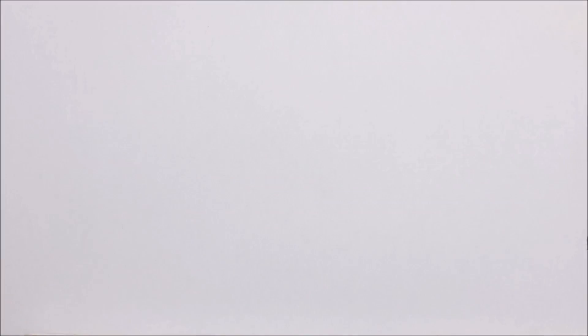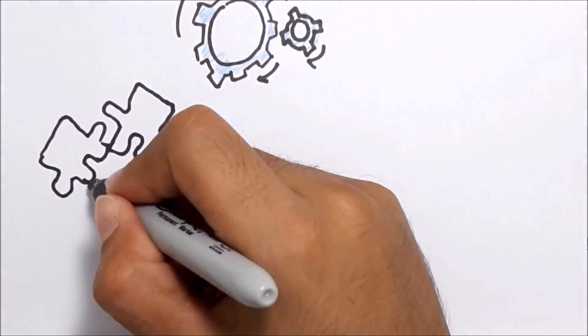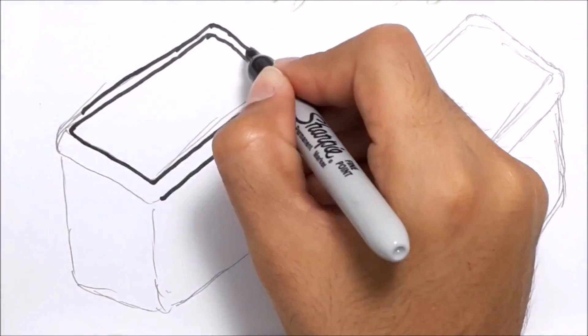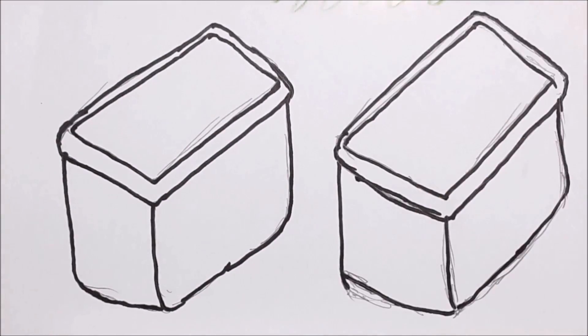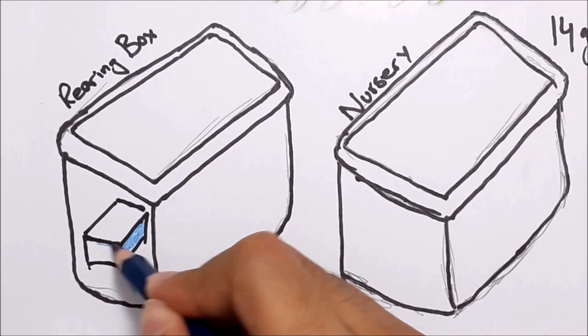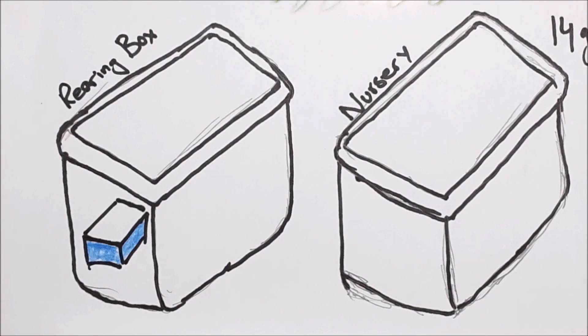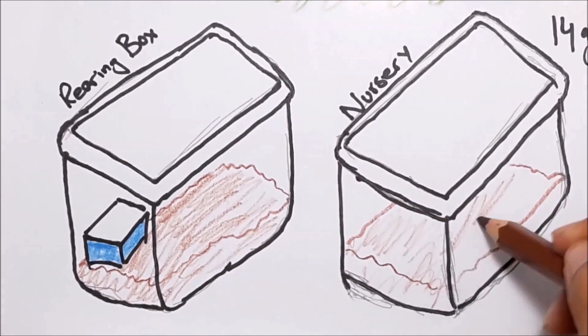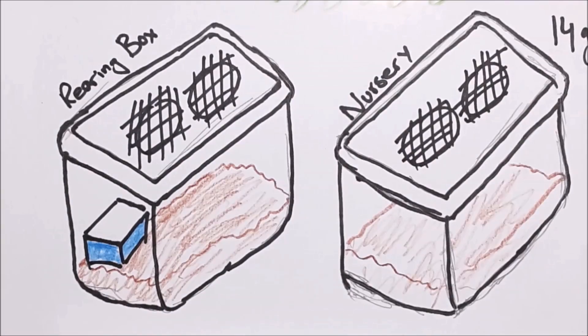As far as technical details go, the idea is quite simple. The main component of the cricket farm is the cricket kit. Each kit comprises two 14-gallon PVC boxes, one nursery and one rearing container, which also has an egg-laying box. Both of the boxes are lined with soil and have gauze-covered breathing holes. Each kit costs around $15-18.